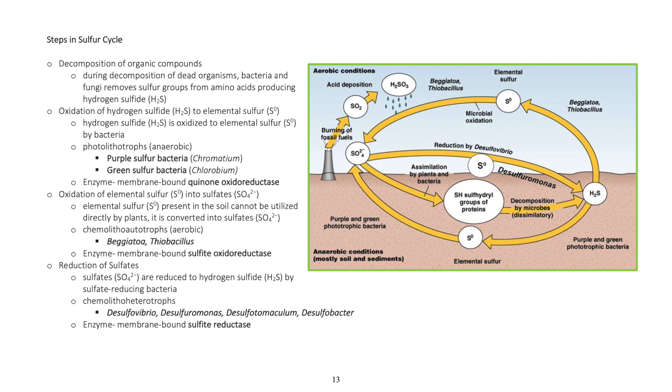Oxidation of elemental sulfur into sulfates. Elemental sulfur present in the soil cannot be utilized directly by plants; it is converted into sulfates. Chemolithotrophs, aerobic: Beggiatoa, Thiobacillus. Enzyme: membrane bound sulfide oxyoreductase.